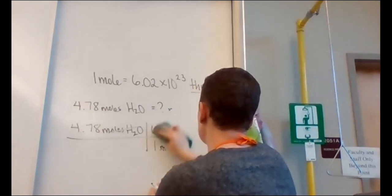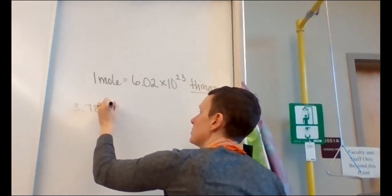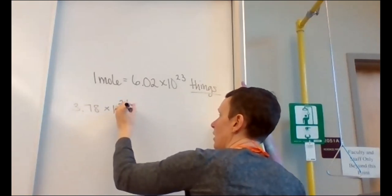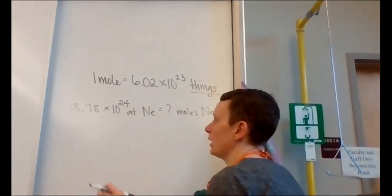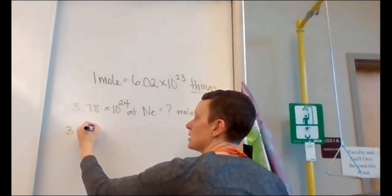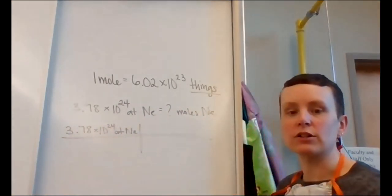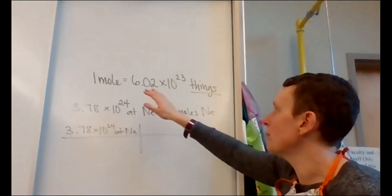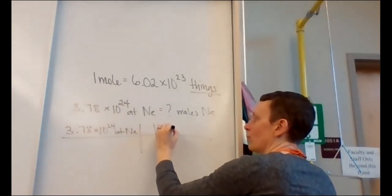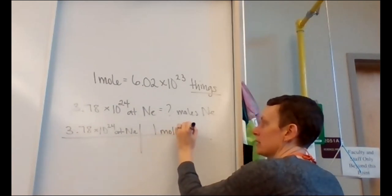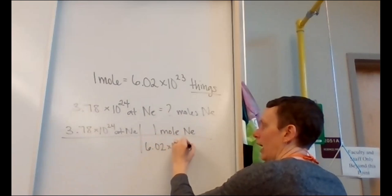Second example: you have 3.78 times 10 to the 24th atoms of neon — how many moles do you have? Start with what's given: 3.78 times 10 to the 24th atoms of neon. Set up your factor-label grid. You want to cancel atoms, so place one mole of neon on top and Avogadro's number — 6.02 times 10 to the 23rd atoms of neon — on the bottom.